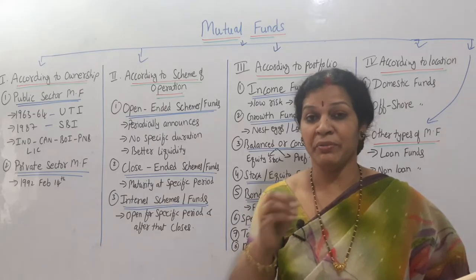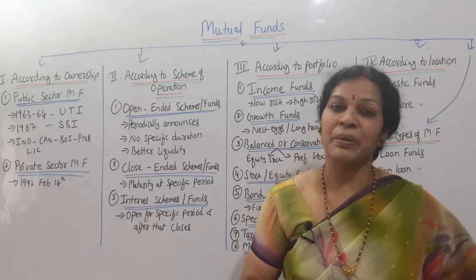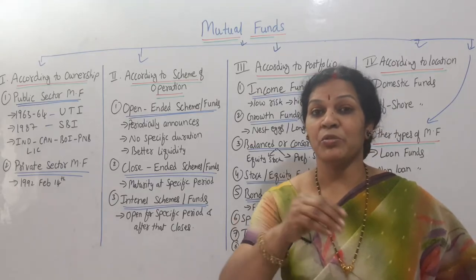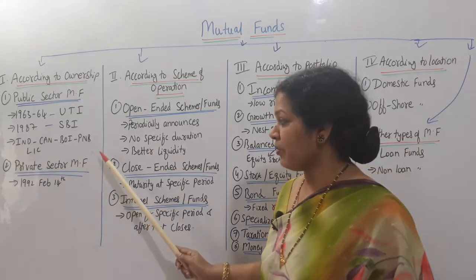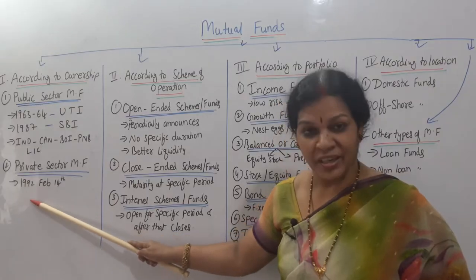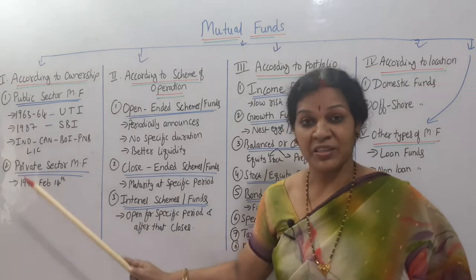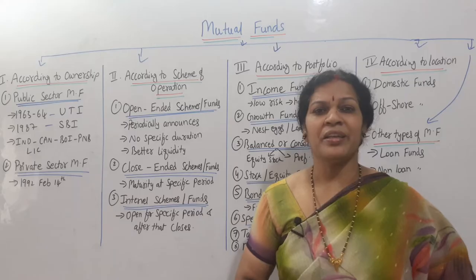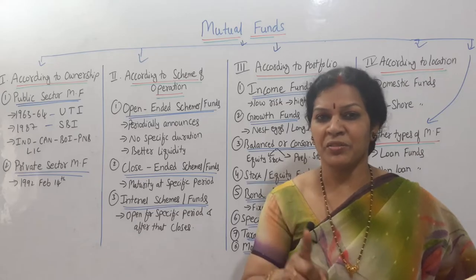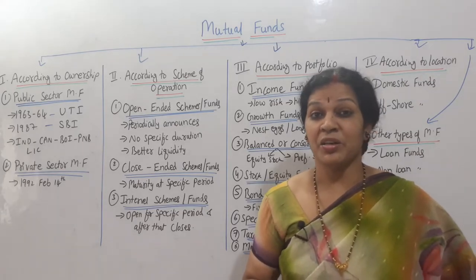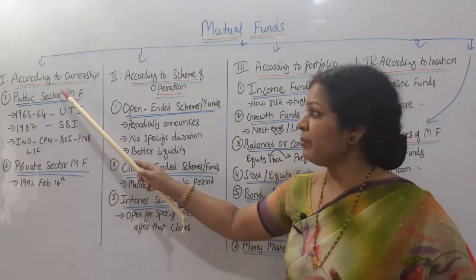Government mutual funds alone were not sufficient to attract finance from every corner — from middle class and higher class people. So they gave opportunity to private sectors as well. Private sector companies entered into mutual funds starting in the year 1992 — around February 14, 1992. There are many private sector banks offering mutual funds, like HDFC and ICICI Bank, giving investors the opportunity to put their investments in mutual funds.